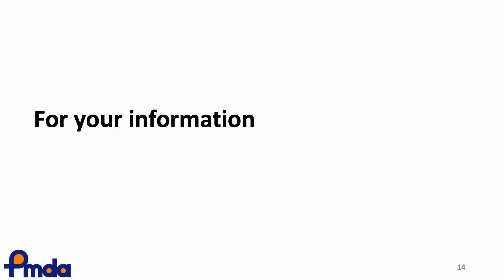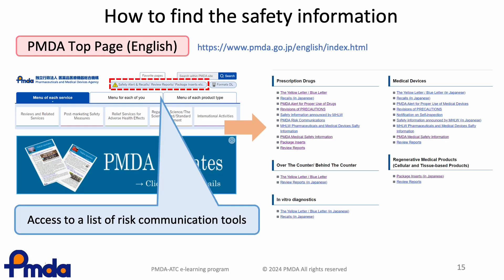For your information, the following slides share how to find safety information and the email alert service in Japan. This is the top page of the PMDA website in English. From this page, you can access the risk communication tools.